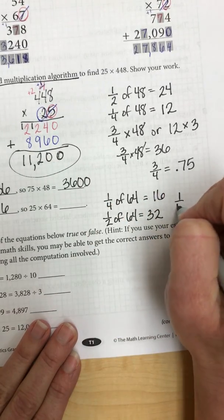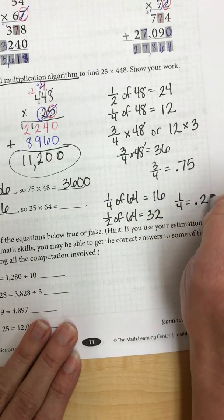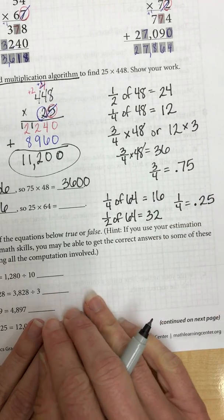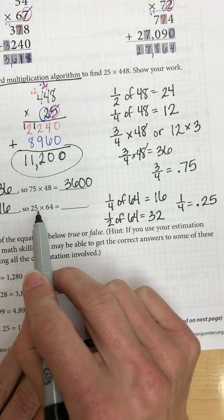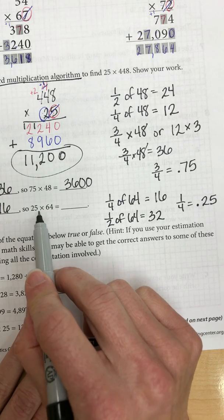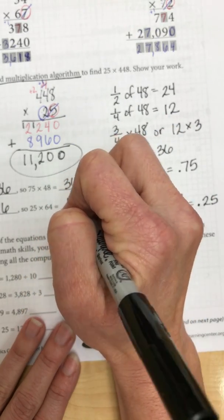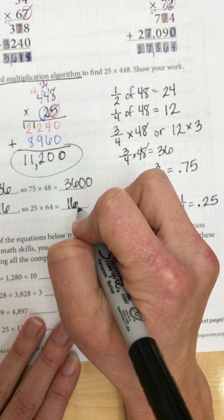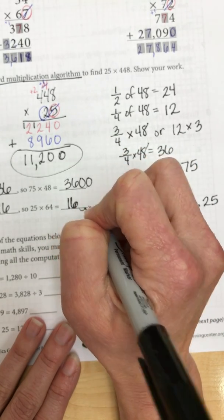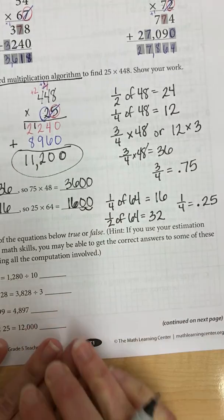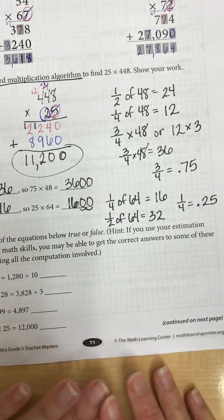Well, one fourth is the same thing as 25 cents or 25 hundredths. So if I have 25 times 64, now all I have to do is move my decimal two place values. So I know I have 16 and I have to move two place values, one, two. So it would be 1,600.